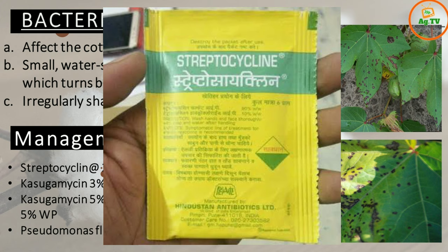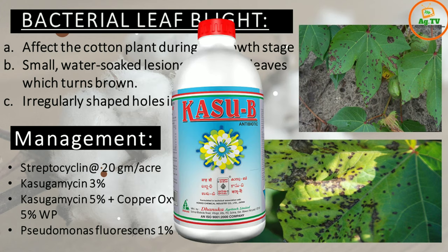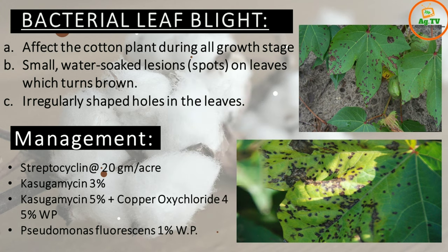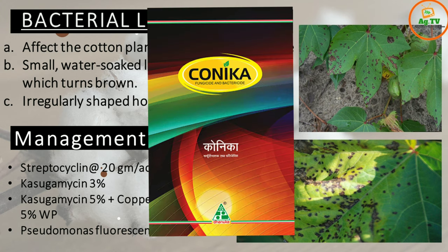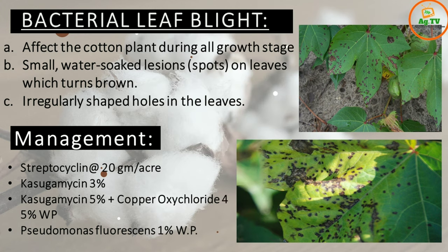Like streptocycline 20 grams per acre. Or you can use 3% kasugamycin. Or you can use an antibiotic plus fungicide combination, like 5% kasugamycin. You can use copper oxychloride 45% WP. Or you can use biopesticides like Pseudomonas fluorescens, which covers bacterial infections.